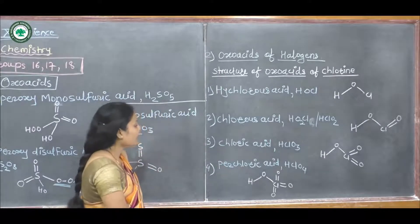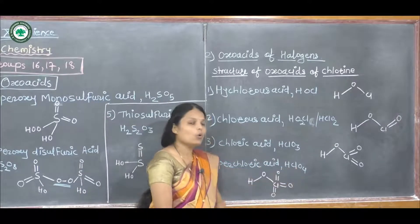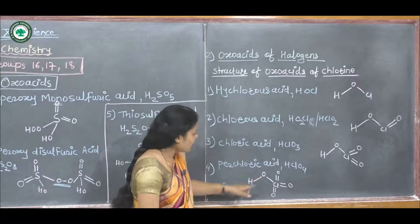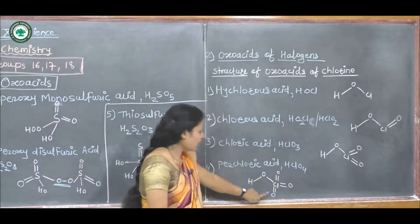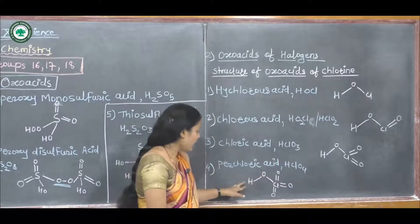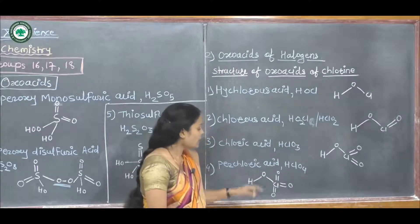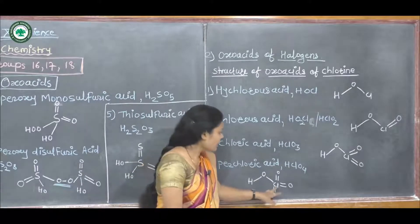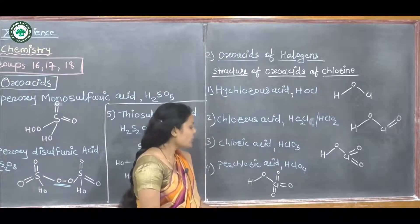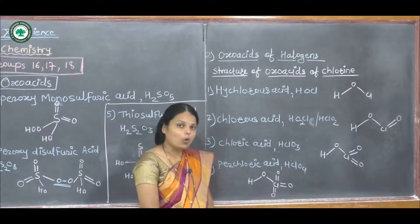The last one is perchloric acid, with formula HClO₄. Here one more oxygen atom is added, giving four oxygen atoms, one chlorine atom, and one hydrogen atom. HO bonds are attached to the chlorine atom along with three double bonds to oxygen. This is the structure of perchloric acid.